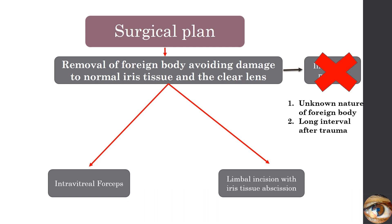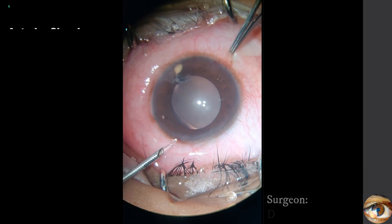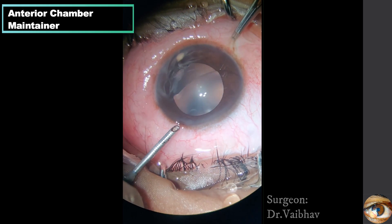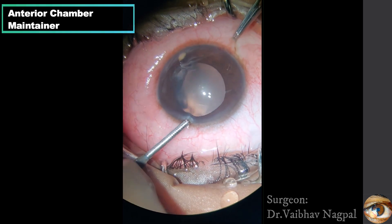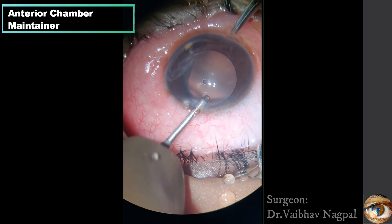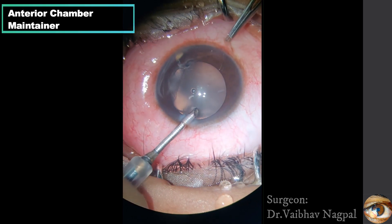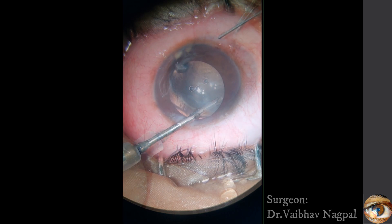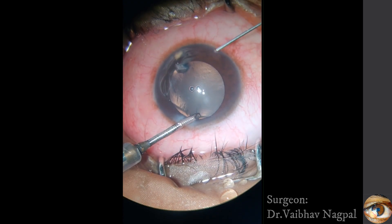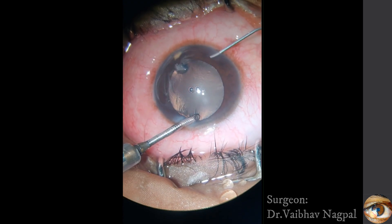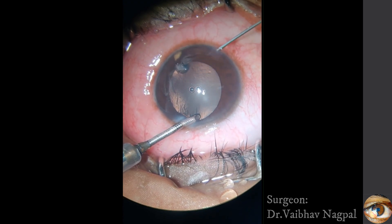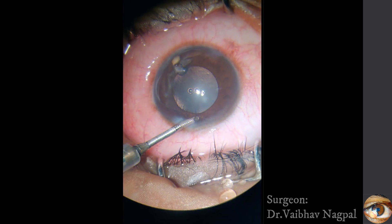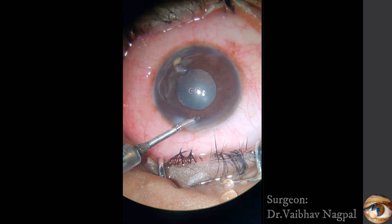Let's look at the surgical video. An AC maintainer is placed without touching the clear intraocular lens. Intraocular pilocarpine is applied to prevent damage to the lens during foreign body manipulation.